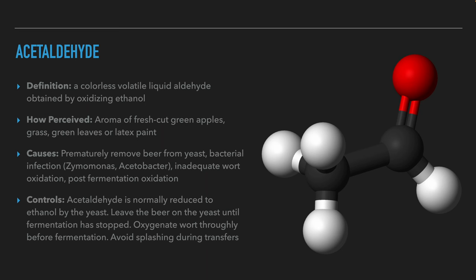The first compound we should know is acetaldehyde. Acetaldehyde is a colorless but very volatile compound that is formed when alcohol oxidizes. This compound has an aroma of green apples, cut grass, green leaves or latex paint. The common causes of acetaldehyde formation are premature removal of the beer from the yeast, bacterial contamination mainly by Zymomonas or Acetobacter which are known to be prolific producers of acetaldehyde, lack of oxidation of the wort before fermentation and post-fermentation oxidation.